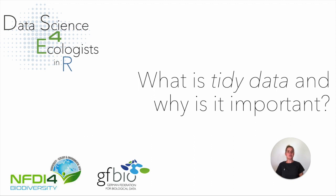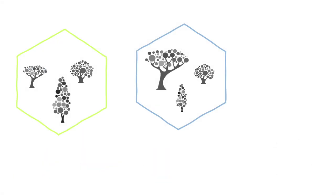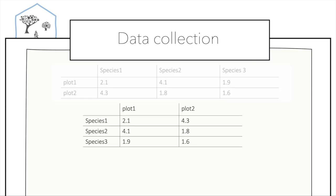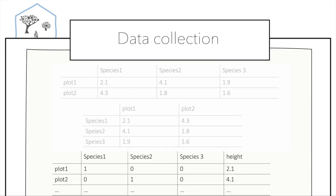But data can be recorded in many different ways. Imagine you have two plots with different environmental parameters and you want to know if plant heights are different between those two plots. So you go out to one of your plots and note down the height of each plant species, then go to the second plot and do exactly the same. But the same data can be recorded in different formats — for example, where species are in rows and plots are in columns, or with a binary variable indicating the species and height noted in a separate column.